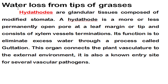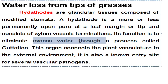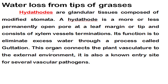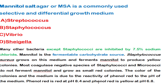The next question: water loss from the tips of leaves involves which particular organ? The correct answer is hydathodes, a glandular tissue composed of modified stomata that are permanently open. Their main function is eliminating excess water through guttation. The same question appeared in the CSIR September 2022 paper. This organ connects the plant vasculature to the external environment and is an entry site for several vascular pathogens.